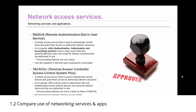Another network access service is RADIUS — Remote Authentication Dial-In User Service. RADIUS is a remote access service used to authenticate remote users and grant them access to authorized network resources. It is a popular AAA protocol — that's Authentication, Authorization, and Accounting. It's used to help ensure that only authenticated end users are using the network resources they are authorized to use. The accounting services of RADIUS are very robust. The only drawback is that only the requester's password is encrypted; everything else gets sent in the clear.